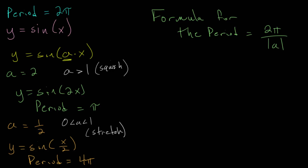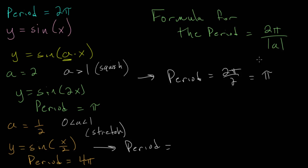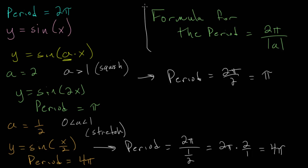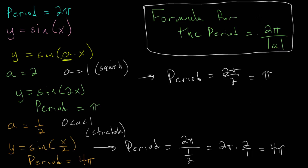We can derive this formula by testing different values of a. When a = 2, the period is 2π/2 = π, which matches. When a = ½, we get 2π/(½) = 4π — dividing by a fraction is the same as multiplying by its reciprocal — which also matches. Testing other values confirms this formula is valid and useful for finding the period from the equation.